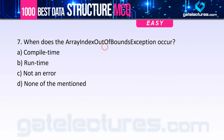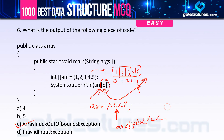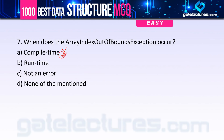Question 7 asks: when does ArrayIndexOutOfBoundsException occur? It does not occur at compile time. At compile time, the compiler only checks type correctness — for example, passing a float value to an integer array would be a compile-time error. The ArrayIndexOutOfBoundsException occurs only at runtime, when memory is allocated and the invalid index access is detected. The correct answer is option B.